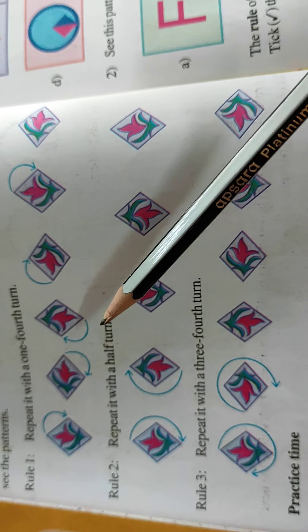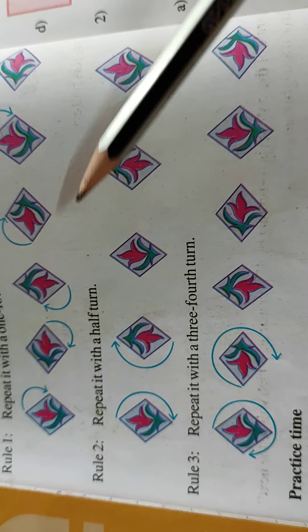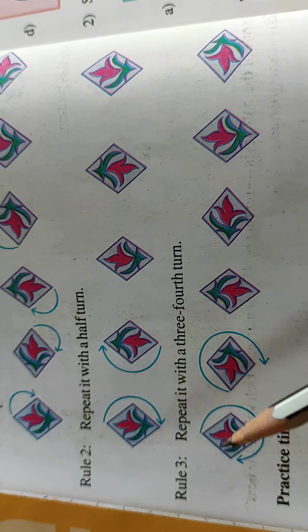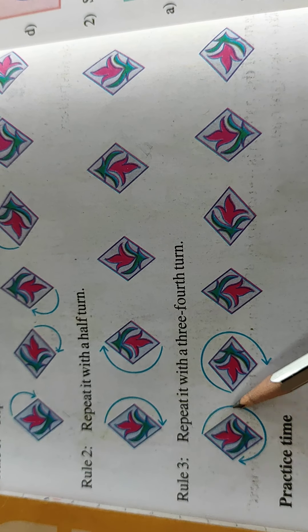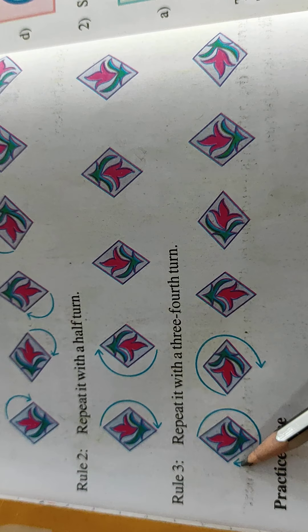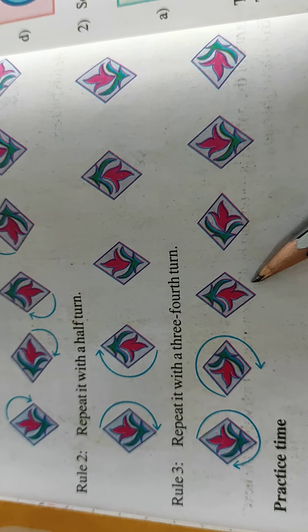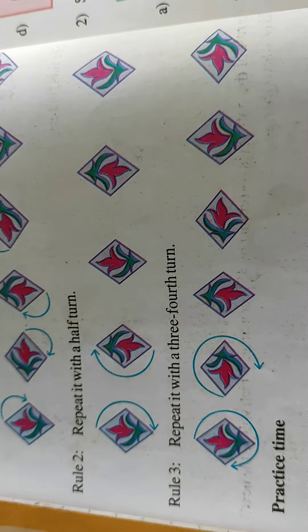Repeat it with half turn. So upwards-downwards, upwards-downwards. You can repeat it with three-fourth turn. That means three-six-nine, then three-six-nine. You can see here in the three-fourth turn.